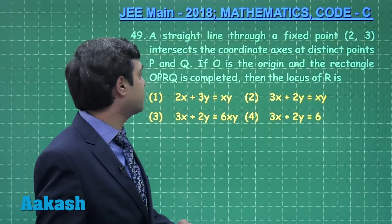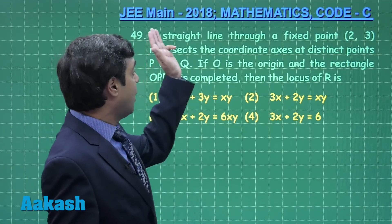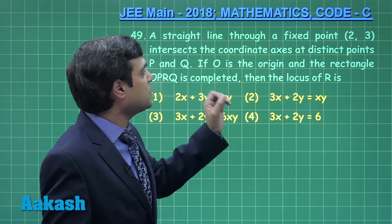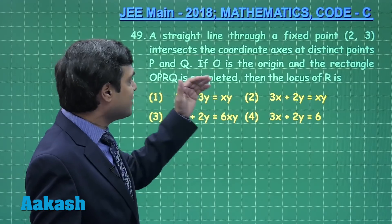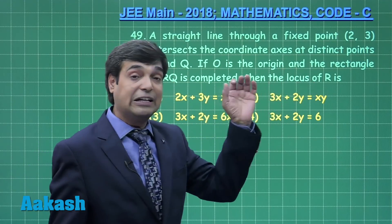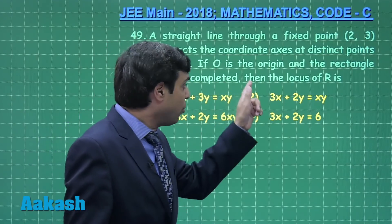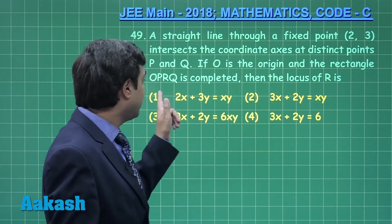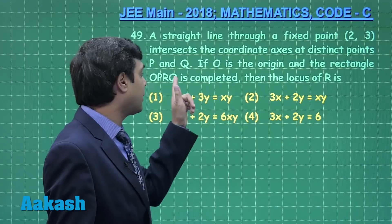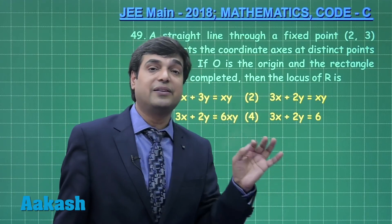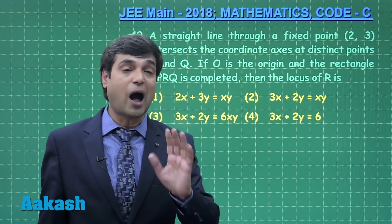Okay, let us move to the next one, question number 49. A straight line through a fixed point (2, 3) intersects the coordinate axes at distinct points P and Q. If O is the origin and the rectangle OPRQ is completed, then find the locus of point R.